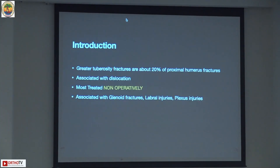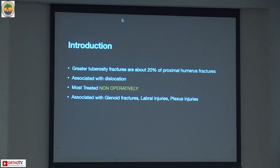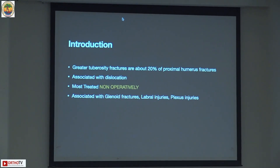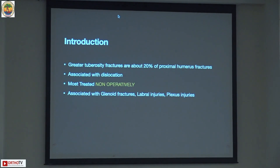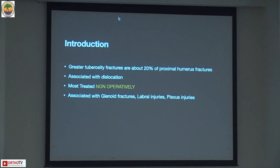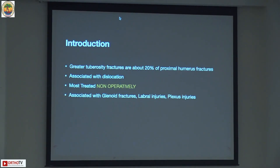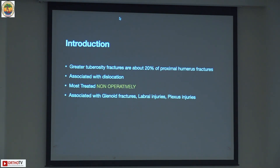Greater tuberosity fractures account for 20% of all proximal humerus fractures. They are associated with dislocations — not every time, but violent forces can cause dislocation. This talk is not about saying that you need to operate every single GT fracture; it can be treated non-operatively. We'll come to the reasons for why to operate.